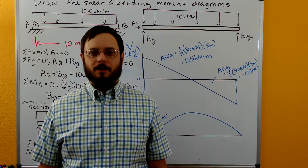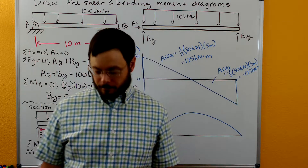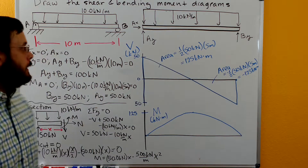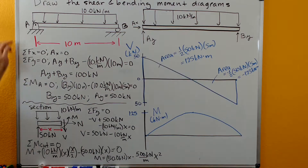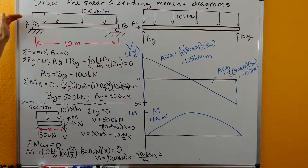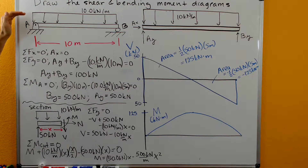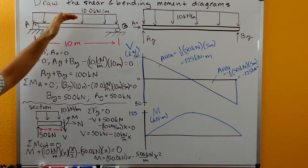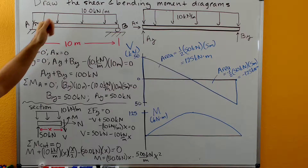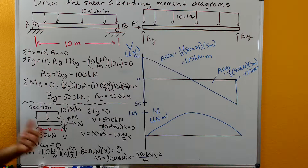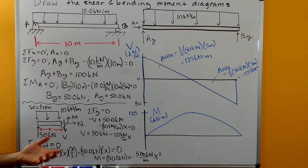Welcome to the statics tutorials. In this case we have a beam where we have a 10 kN per meter constant distributed load. Let's see how that affects the shear and bending moment diagrams.